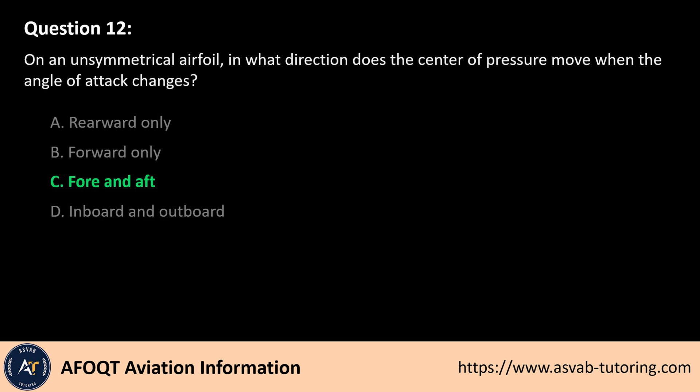The answer is C. On an unsymmetrical airfoil, the center of pressure moves fore and aft as the angle of attack changes. When the angle of attack increases, the center of pressure moves forward, generating more lift. Conversely, when the angle of attack decreases, it shifts rearward. This movement affects aerodynamic stability and control, making it important in aircraft design.